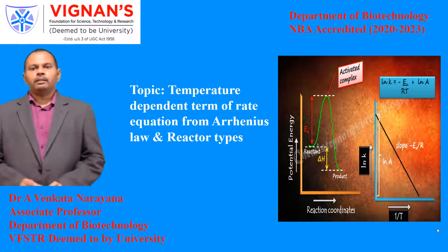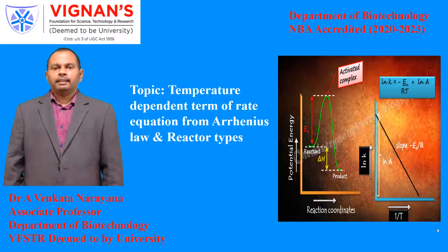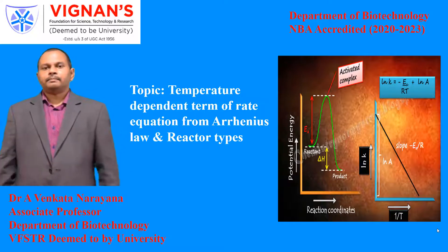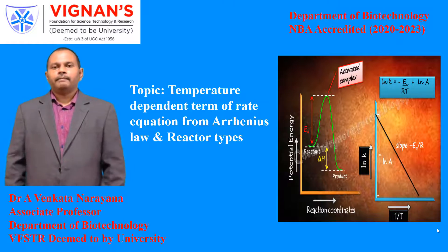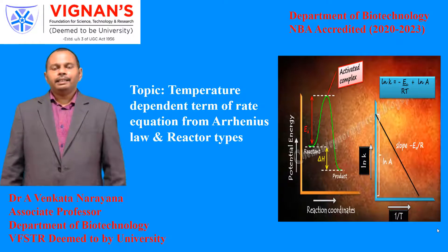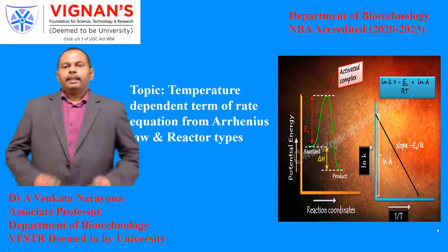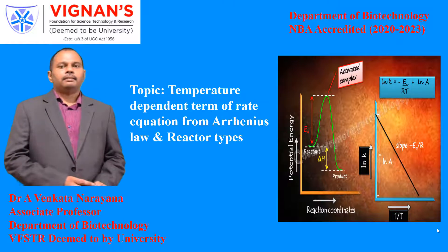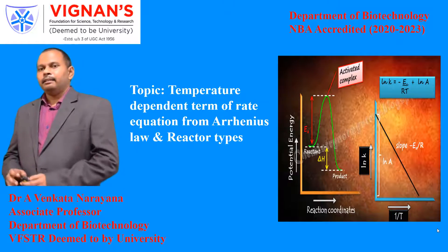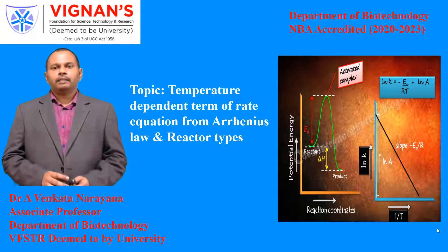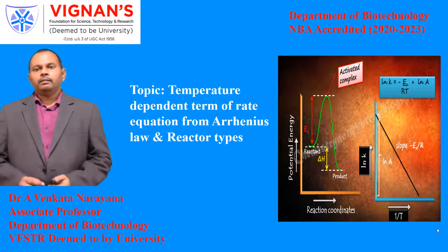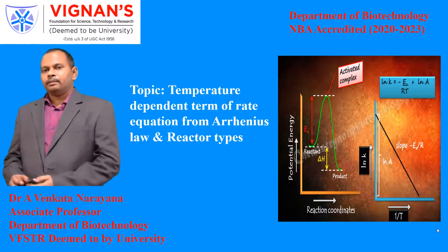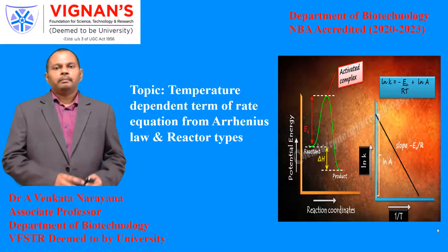Today I would like to discuss about the Temperature Dependent Thermal Rate Equation from Arrhenius Law and various reactor types. With the help of the Arrhenius equation, we can find out the rate constant and activation energy of the reaction. The rate constant is the temperature dependent term of the rate equation, and activation energy is the minimum amount of energy required for the reacting molecules to produce the desired products. We are also going to discuss about various reactor types used to carry out chemical or biochemical reactions.